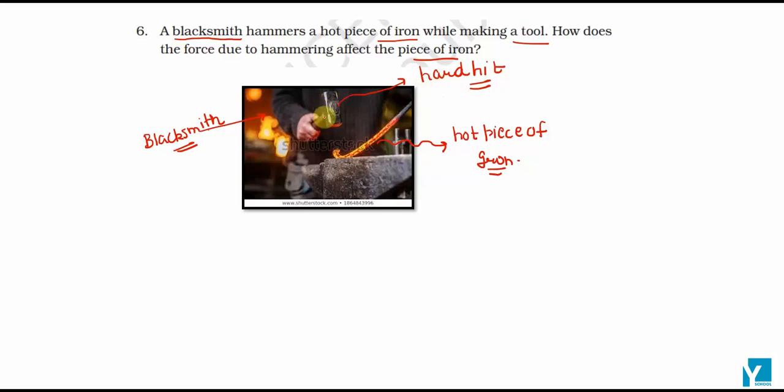Now, with this hard hit, with this force, what does it have to do? So, the answer is that when blacksmith hits this hot iron very hard, that's why this hot iron will change its shape.